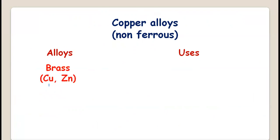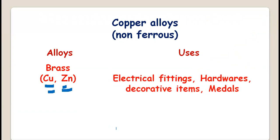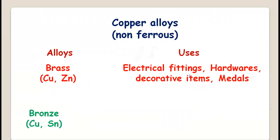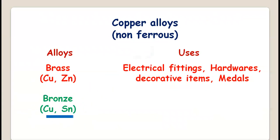Brass is an alloy of copper and zinc. Its applications include electrical fittings, electrical components, and hardware items, for example, door knobs. It is a non-ferrous alloy.